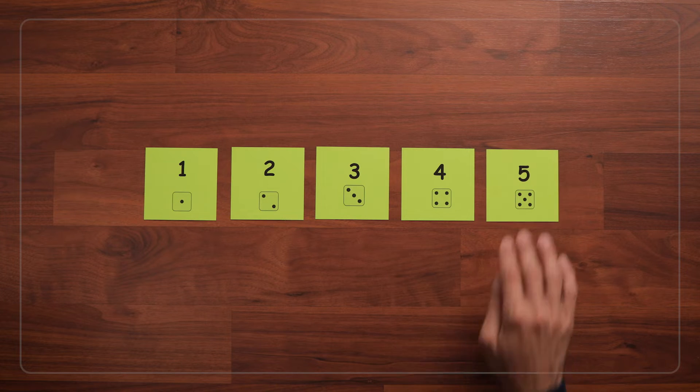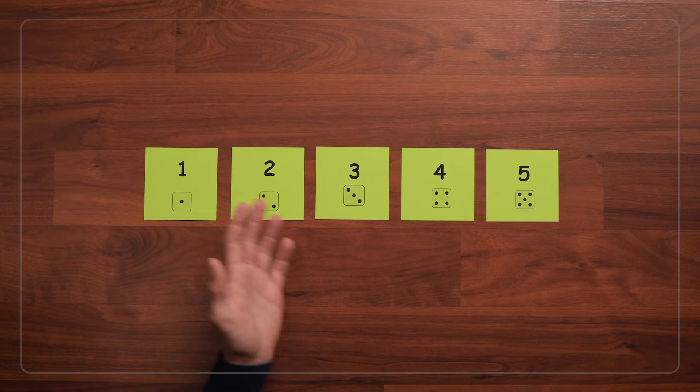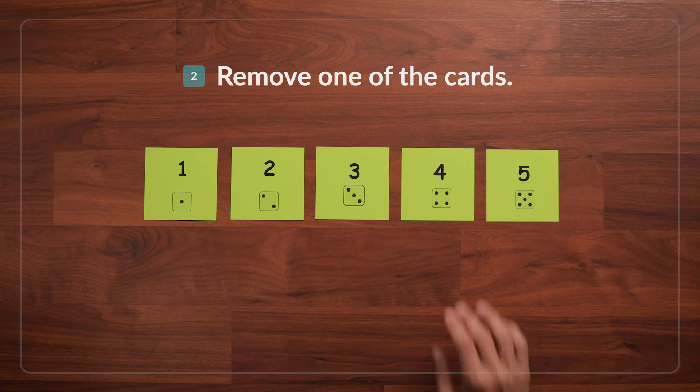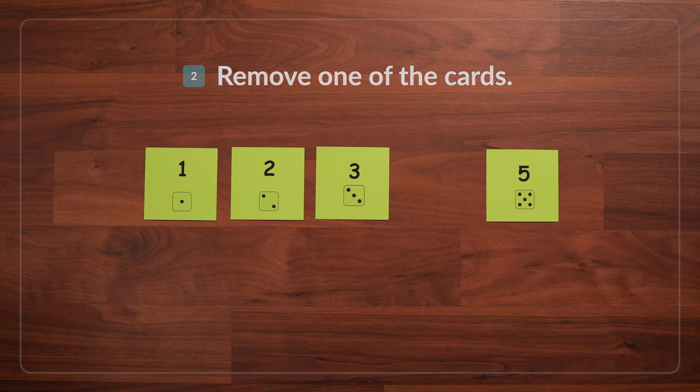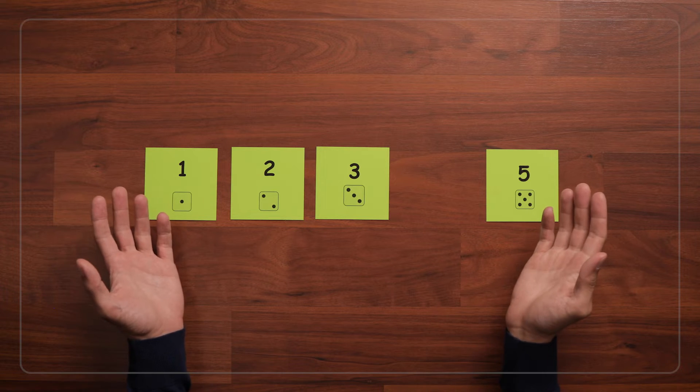Once the cards are in order, I'll say, okay, close your eyes, and then I'll remove one of the cards. Then I'll say, open your eyes. What's the missing card?